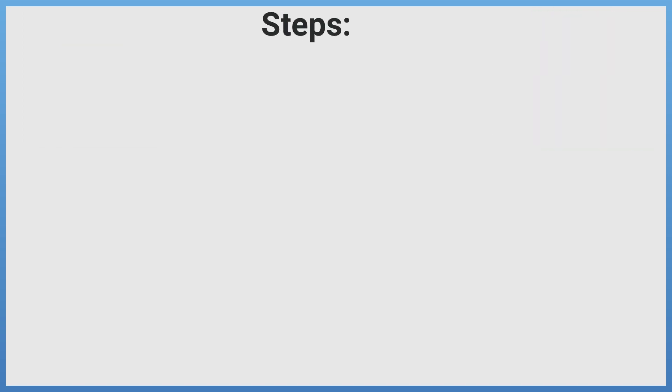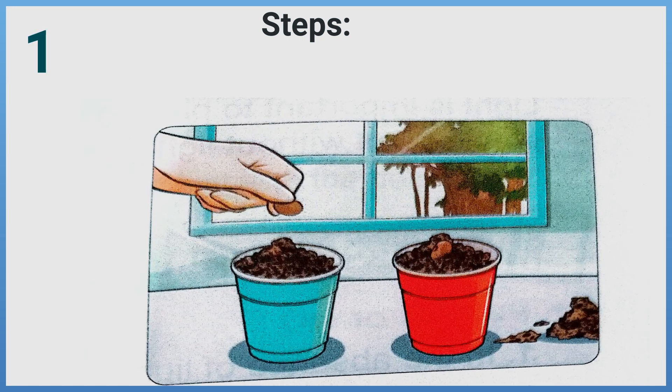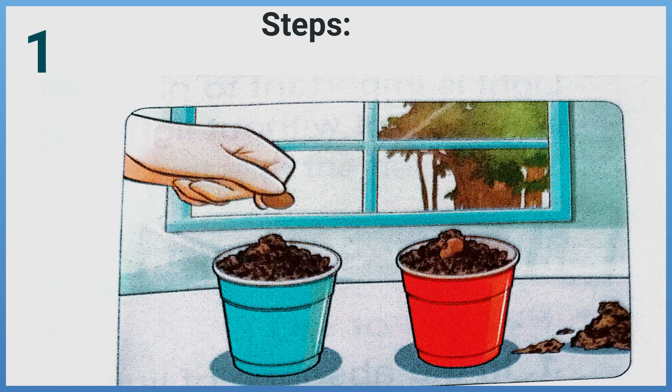Steps. 1. Add soil to the two cups. Place the bean seeds on the soil, one per cup, and cover the seeds with about 2 centimeters of soil.